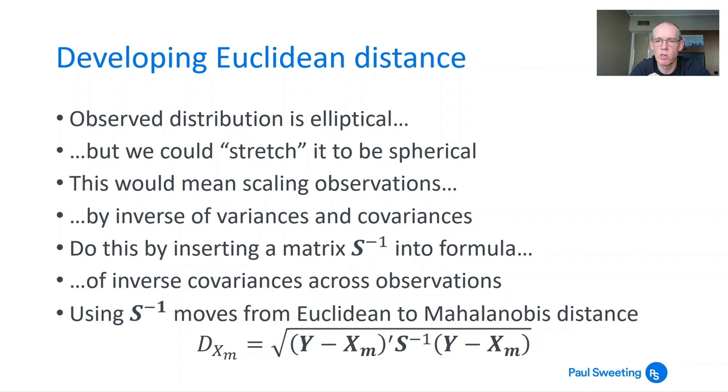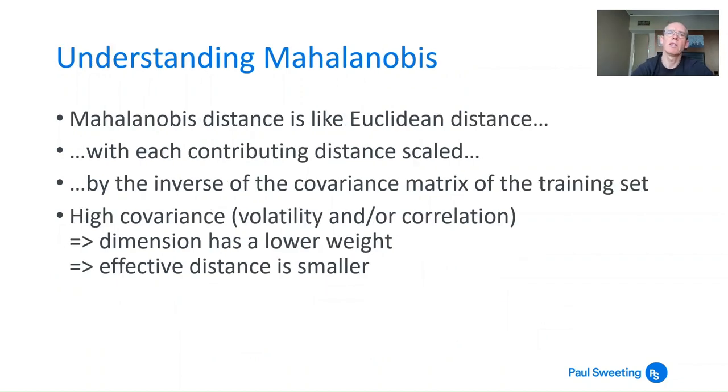Instead of having Y minus xm transpose times Y minus xm, you have Y minus xm transpose multiplied by S^-1, the inverse of that covariance matrix, multiplied by Y minus xm, and then you take the square root of that. What that does is it moves you from the Euclidean distance to the Mahalanobis distance. The Mahalanobis distance is a kind of standardized alternative to the Euclidean distance which explicitly allows for the correlation between the variables you're looking at and different volatilities in the variables. It's like Euclidean distance with each contributing distance scaled by the inverse of the covariance matrix of the training set. If you've got something which has a high covariance, either driven by the volatility or the correlation, then that dimension has a lower weight and the effective distance is smaller.